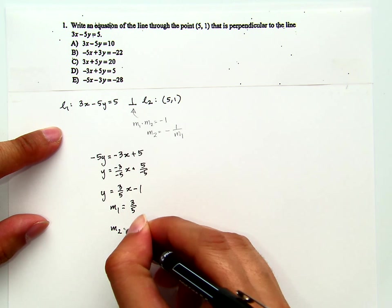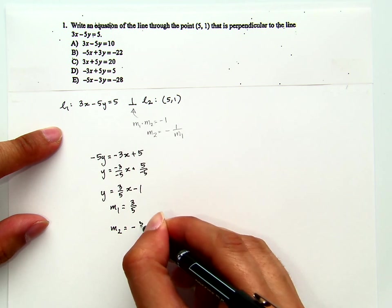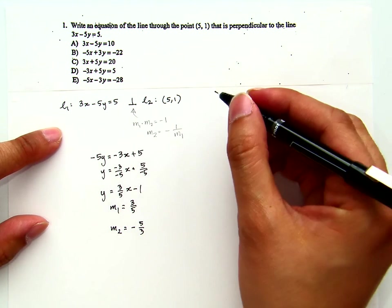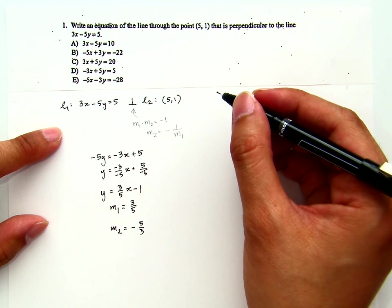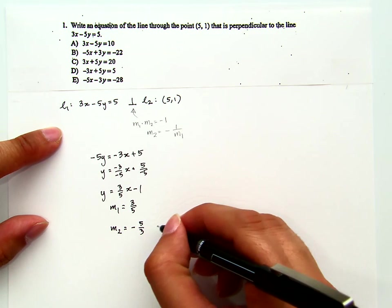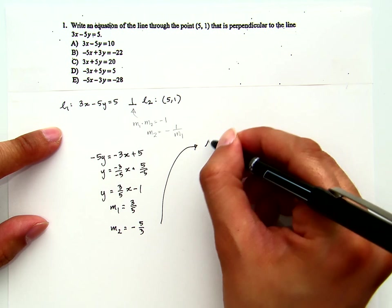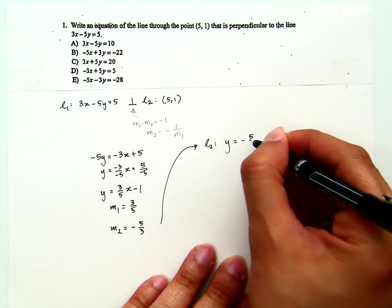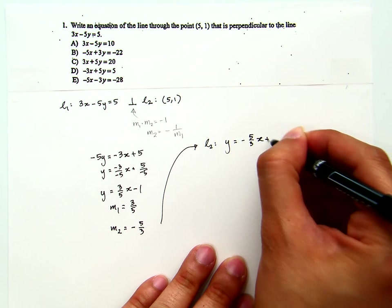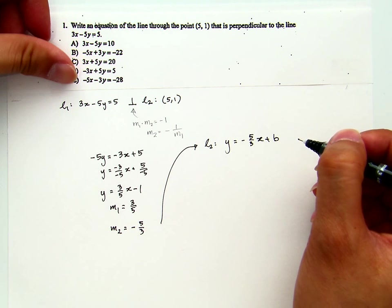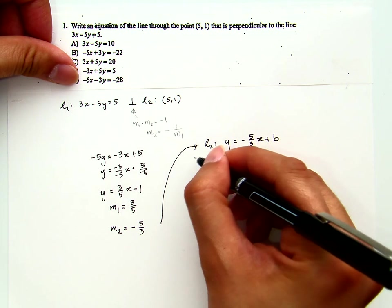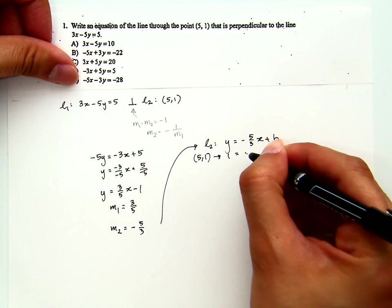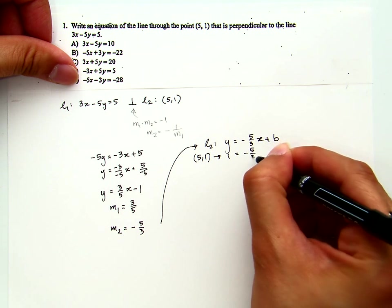Now the slope for line 2 therefore is negative reciprocal, negative 5 thirds. Now then from here, when I go to line 2, we know that line 2 must have this equation, y equals negative 5 over 3x plus some constant. And then using the coordinate that we know passing through line 2, I will try to find that constant.